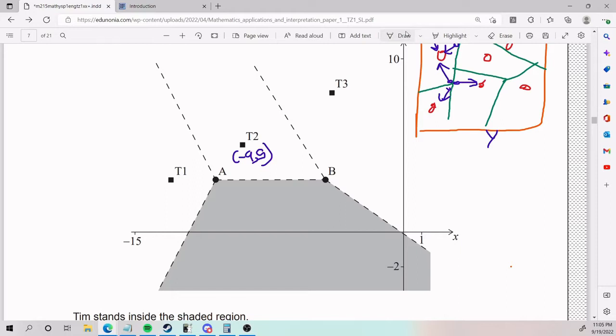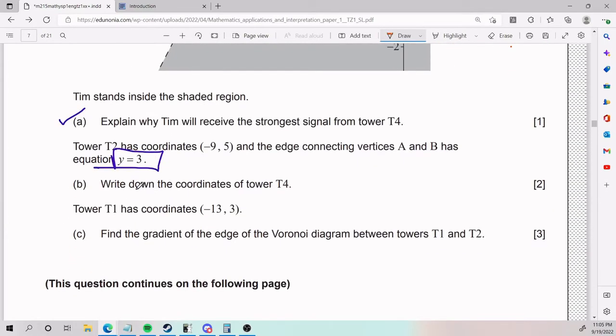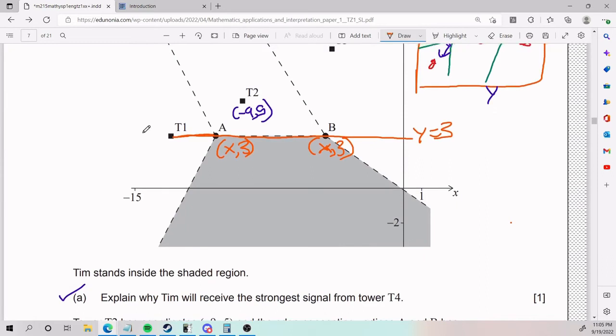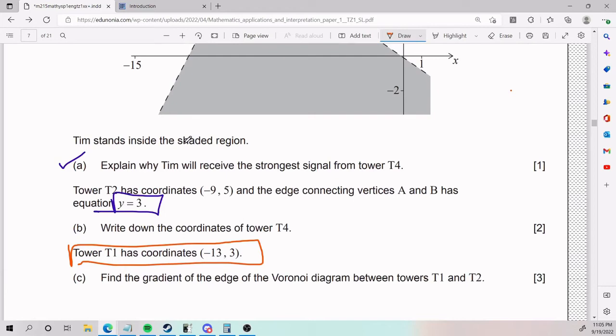That is the intuition of Y equals 3. So what information does that give me? Well, it gives me the information that this line here is Y equals 3. That means that the point A is X comma 3 and the point B is X comma 3. So it's some X and it has a 3 inside of it. And that means that this T1 also has a 3 inside of it. They actually give us the coordinates of T1 down the road, and it's a 3. So T1, I might as well write it down now, is negative 13 comma 3.